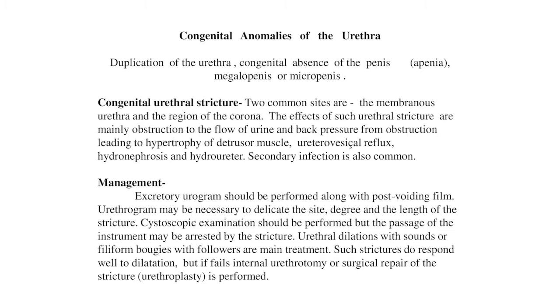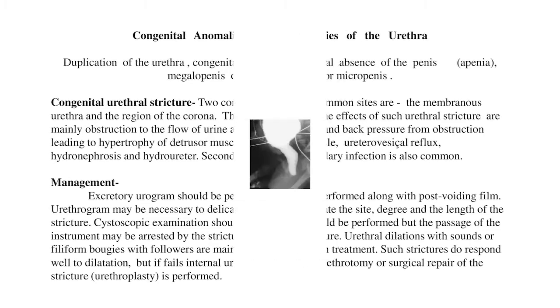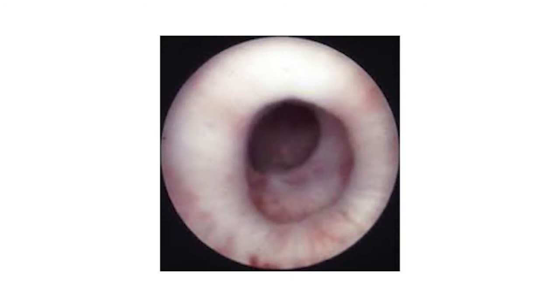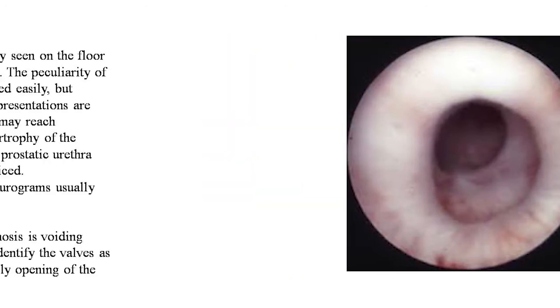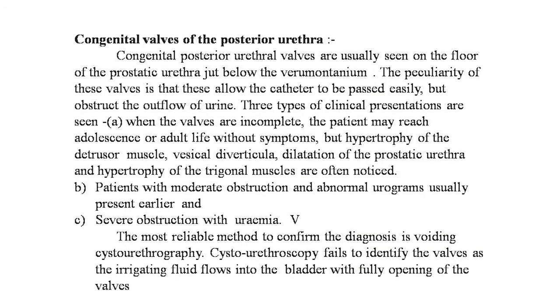Such strictures do respond well to dilatation, but if it fails, internal urethrotomy or surgical repair of the stricture — urethral urethroplasty — is performed. Here on your screen are images of the congenital urethral stricture clearly seen by cystogram, and another image by pediatric cystoscope.